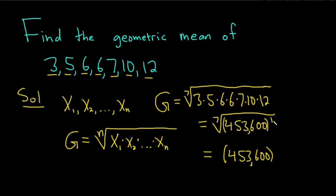There's really a 1 here, so it's 1 over 7. And you can type this into most calculators. So this is approximately, let's see, 453,600 to 1 over 7. So I get 6.43 roughly. So that would be the geometric mean.